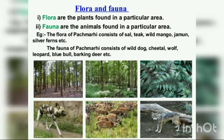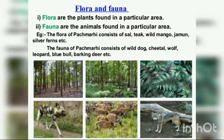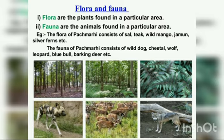Flora means plants and trees, and fauna means the different types of animals living in that area. The plants and animals found in a particular area are termed as flora and fauna. For example, flora includes sal trees, teak, jamun, silver ferns, and arjun. Fauna means animals — different kinds of animals like bison, deer, blue bull, parking deer, cheetal, leopard, wild dog, and wolf — these all come under fauna.